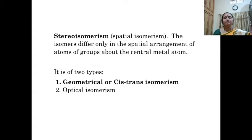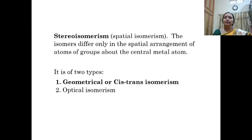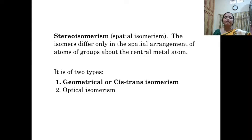In stereoisomerism, or spatial isomerism, the isomers differ only in the spatial arrangement of atoms or groups of atoms about the central metal atom. It is of two types: one is geometrical or cis-trans isomerism, and the other is optical isomerism.